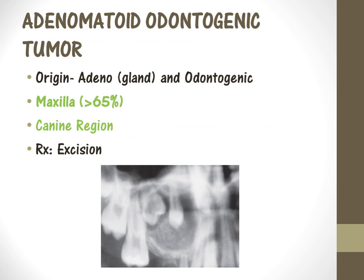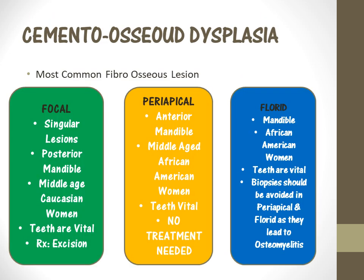The third tumor is the adenomatoid odontogenic tumor. Its origin is from glands and odontogenic epithelium. These glands are present in the hard palate, and when they develop a cyst along with odontogenic epithelium, more than 65% of the time it involves the maxilla, most usually in the canine region. Treatment for this type of cyst is excision.